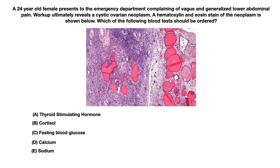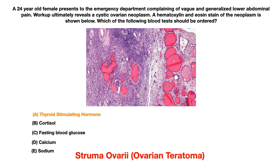The correct answer choice to this question is choice A, thyroid stimulating hormone. The reason this is the correct answer is that this is an ovarian teratoma, and this is a presentation known as struma ovariae. Struma ovariae is a variant of an ovarian teratoma where you have the presence of thyroid tissue in the teratoma.